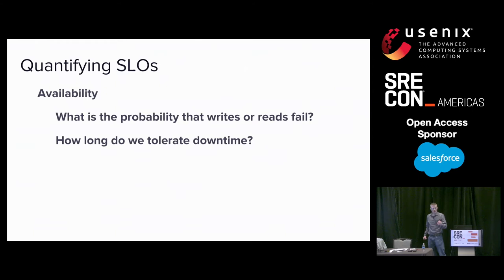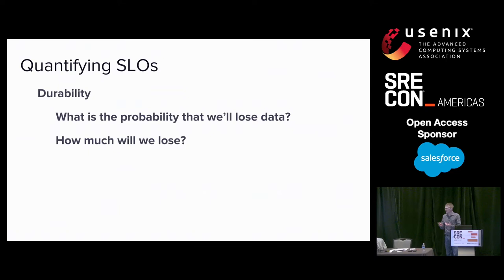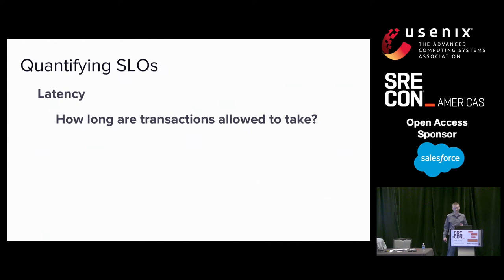The first is availability: what's the probability that writes or reads to Kafka fail? And more importantly, how long of a downtime do we have to tolerate in the worst case? The second service level objective is durability. Once we write data to Kafka, we don't want to lose any of that data before we consume it from any of our consumers. Some of the questions we want to answer is how much of that data will we lose, and how much time should we give our consumers to consume it.